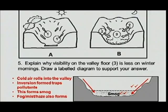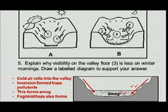Explain why visibility on the valley floor is less on winter mornings, and draw a labelled diagram to support your answer. Visibility is less because we've got a lot of smoke and pollutants there — the cold air rolls down the valley and the inversion traps the smog at the bottom, resulting in poor visibility. In the exam last year, students needed to supply a diagram — two marks for showing the correct wind direction, and two marks for indicating the correct place where smog has formed. Please practice your diagrams; these are easy marks. Make sure you gain the maximum marks when you write your exams or tests.